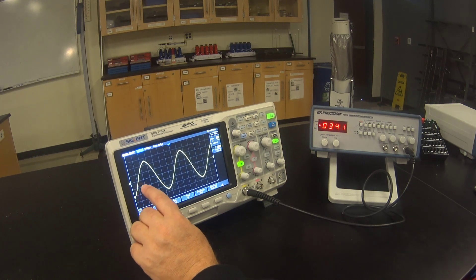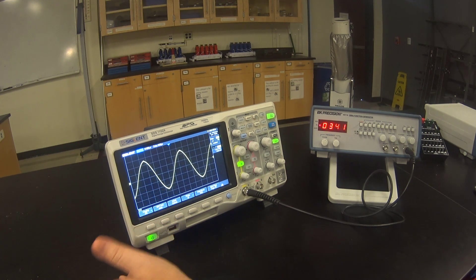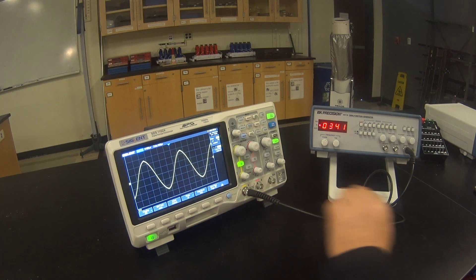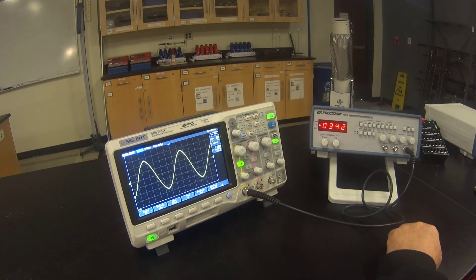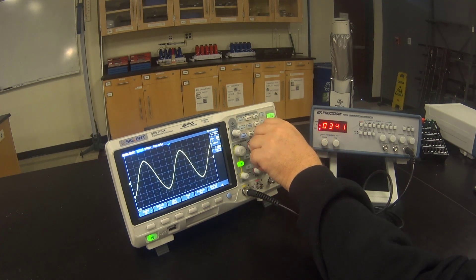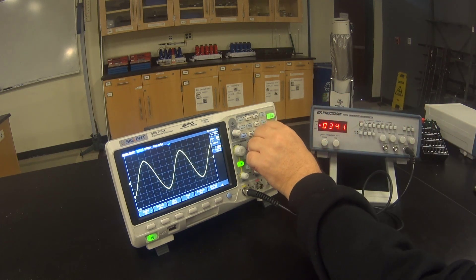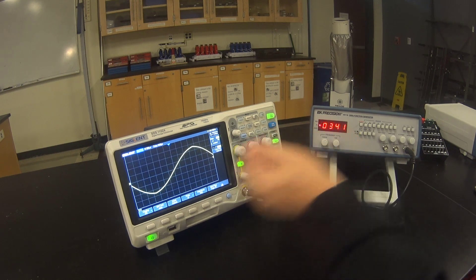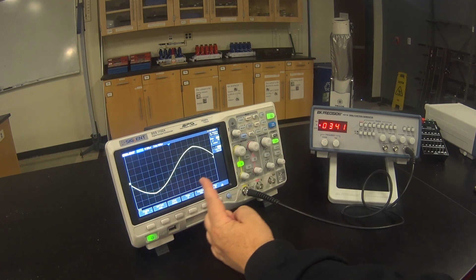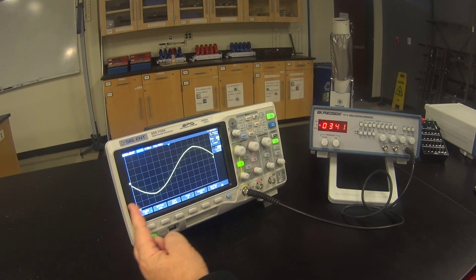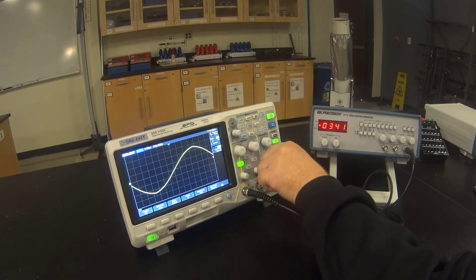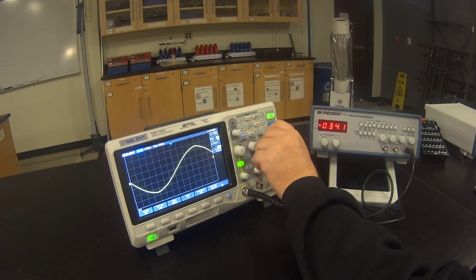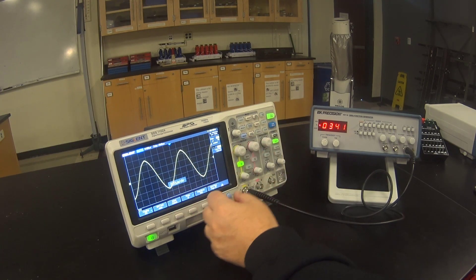We want to know the frequency of this wave. Newer scopes like this can just tell us the value, but we're going to do it by counting divisions and multiplying. First I want to stretch out the wave as much as possible to get one whole wave on the screen. Notice that this is not quite a whole wave, but almost. So I'm going to adjust the time setting to show more waves.